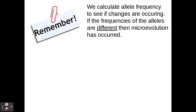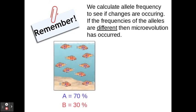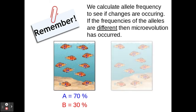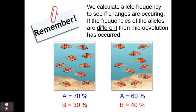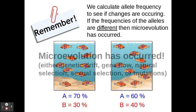Just to reiterate the reason why we're doing this: we calculate allele frequency to see if changes are occurring. If the frequencies of the alleles are different over time, then microevolution has occurred. So if we start with 70% A alleles and 30% B alleles, and over time we notice a shift — now it's 60% and 40% — then microevolution has occurred, meaning genetic drift, gene flow, natural selection, sexual selection, or mutations had to have impacted this population to cause that change in allele frequency.